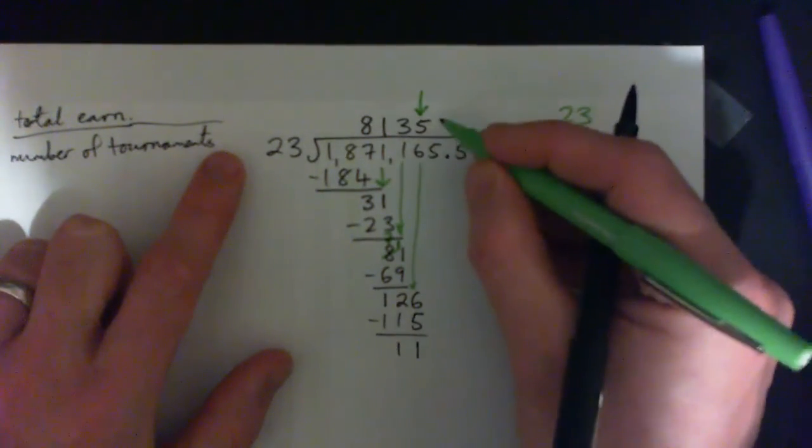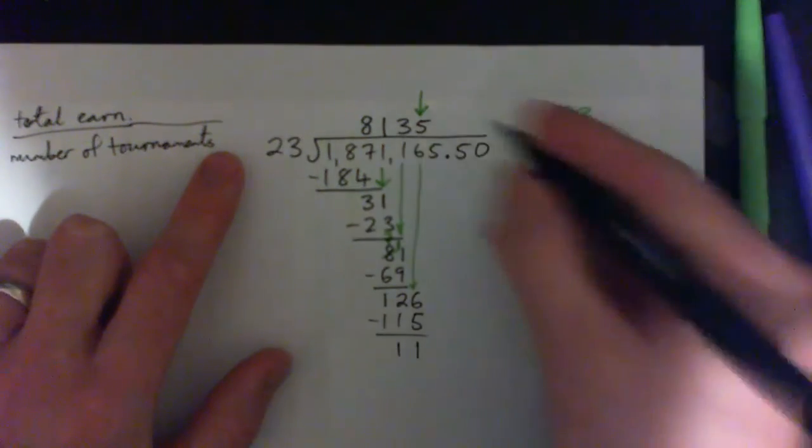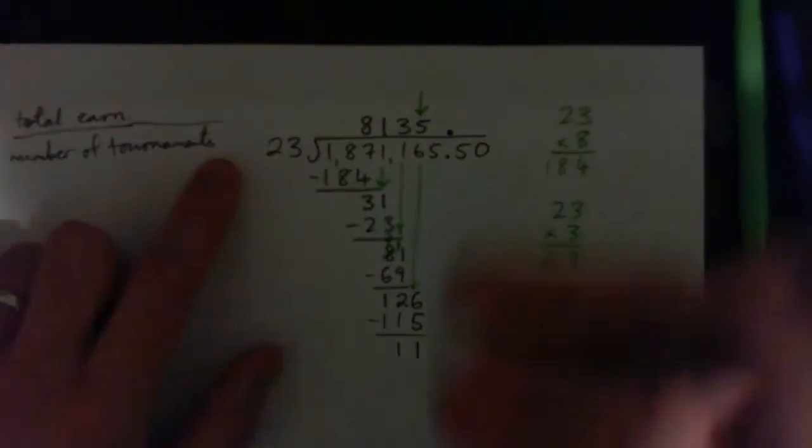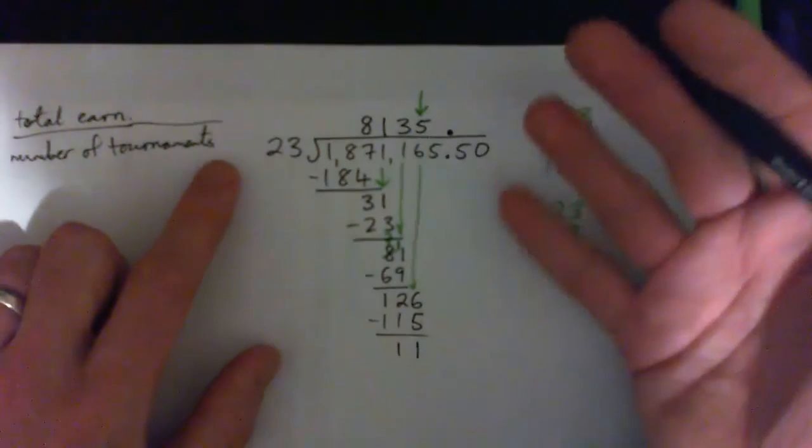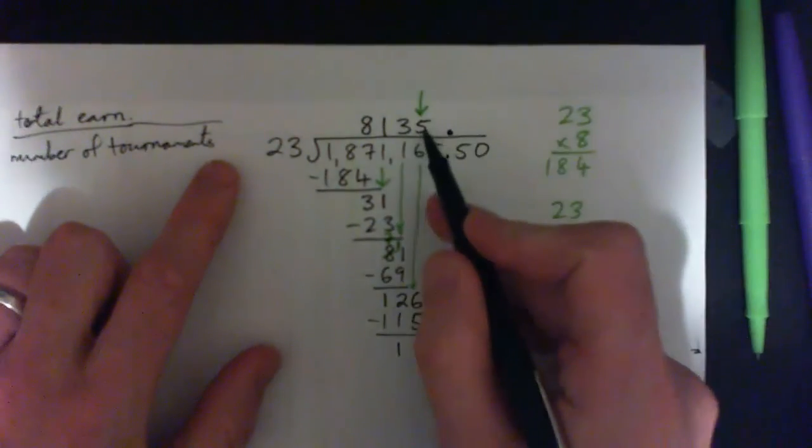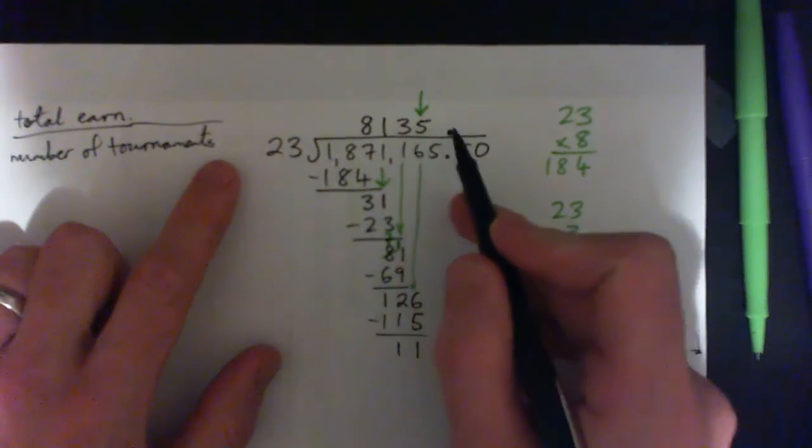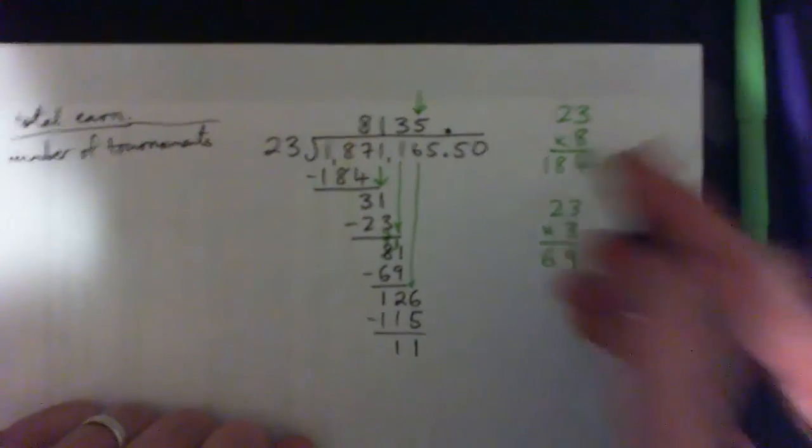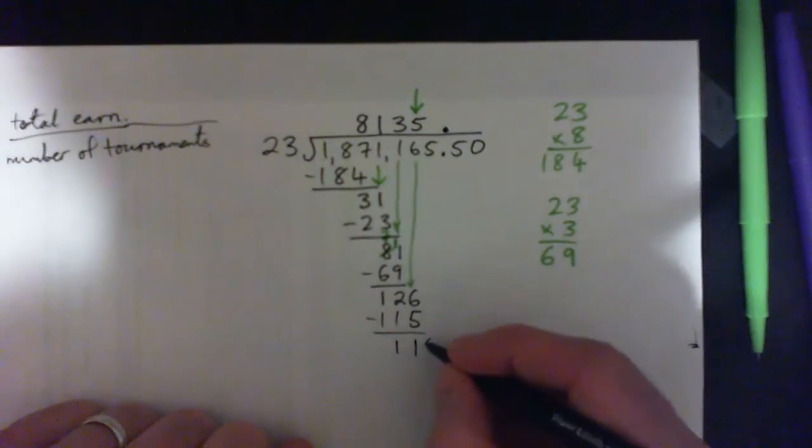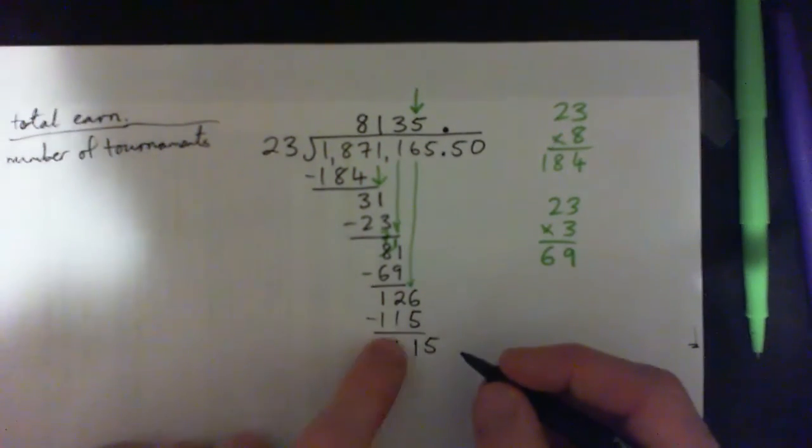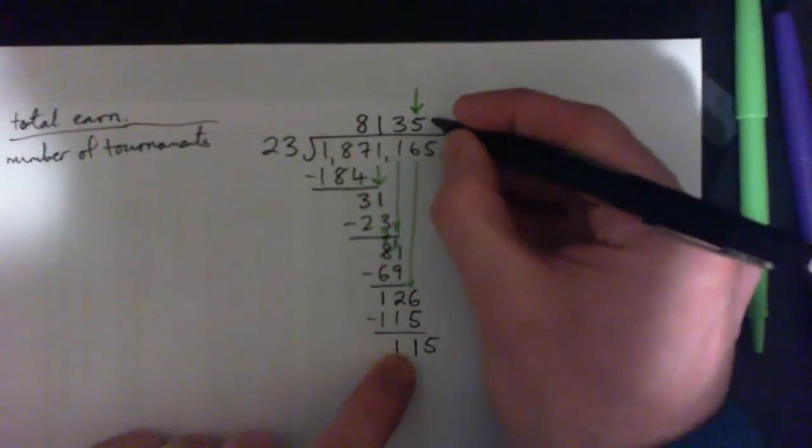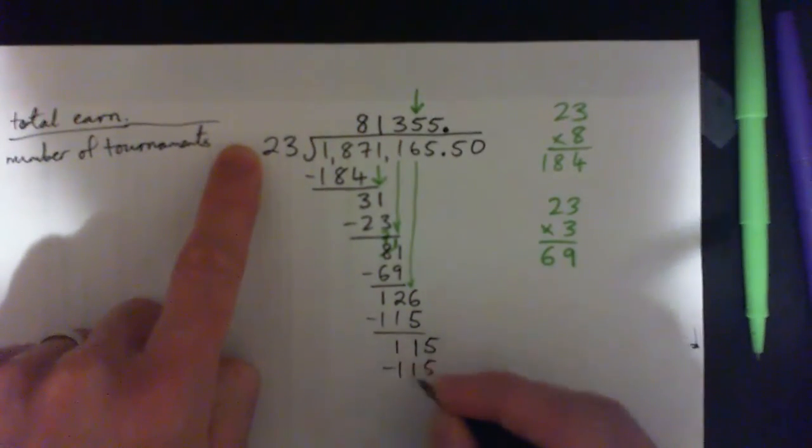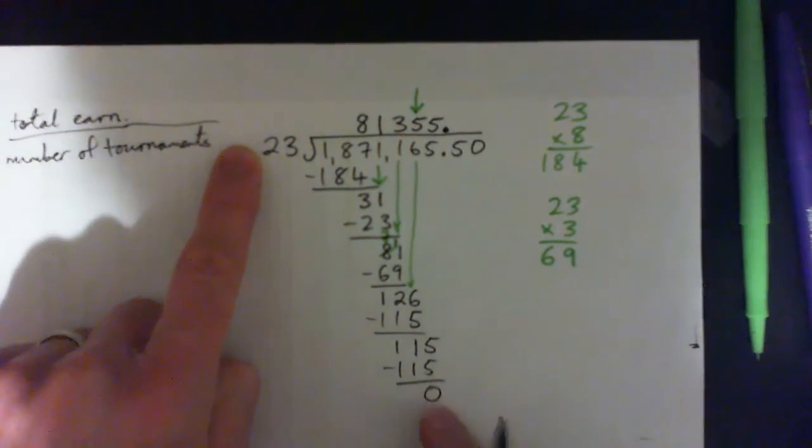And we need one more because we've got to round. Because it's going to be one more digit and then the decimal point. And the question says round to the nearest whole number. Or the nearest, sorry, round to the nearest $10. So we round here. So we need one more digit to figure out whether we need to round up or round down. So bring this 5 down here. 23 into 115. We just found out it was 5 times, wasn't it? 5 times 20, 3 15. Subtract. Remainder 0. So that worked out.